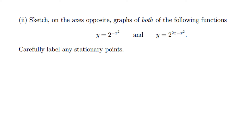Now we're asked to sketch two functions and find stationary points. When you don't know what a curve looks like, try extreme values, think about familiar curves, maybe plot some points. There's obviously an index involved. The first function is y = 2^(−x²).